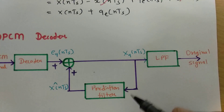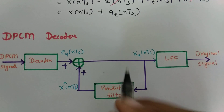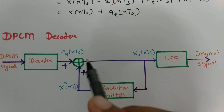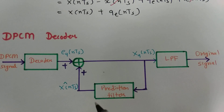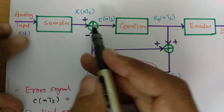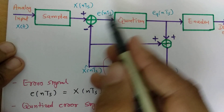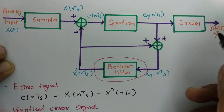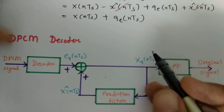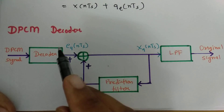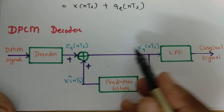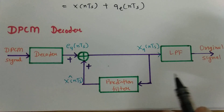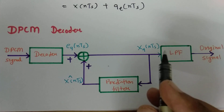To understand this practically, I will be solving one example in the next few sessions, showing the encoding and decoding process and the quantization error. To understand DPCM, remember these basic formulas: the error signal, the input to the prediction filter, and the output of the quantizer. For decoding, we simply add the decoder output and the prediction filter output, then pass through a low pass filter to get the original signal.